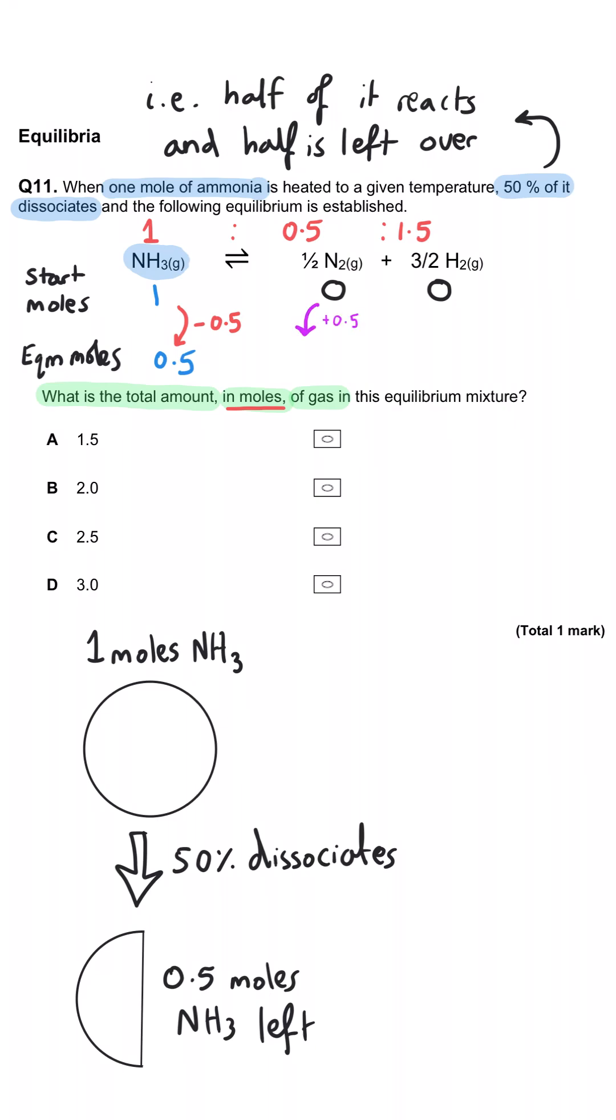we will be making 0.5 times a half, so in other words 0.25 moles of nitrogen.